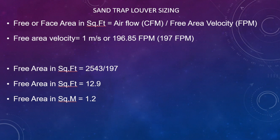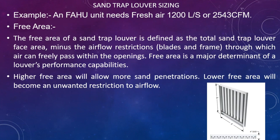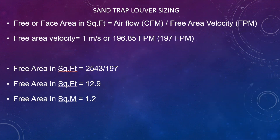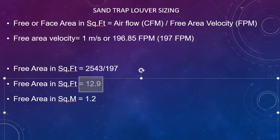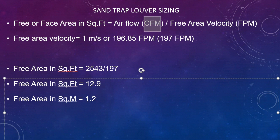The free area velocity is taken as 1 meter per second or 197 feet per minute. Coming to the calculation: free area in square feet equals 2543 CFM — in our case, 1200 liters per second or 2543 CFM — divided by the free area velocity of 197. Finally, we get the answer of 12.9 square feet. Since the units are cubic feet per minute divided by feet per minute, the answer comes in square feet, which we then need to convert to square meters.